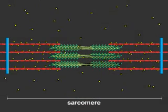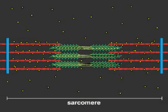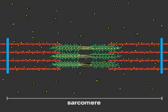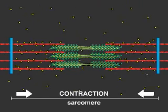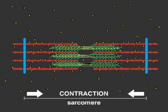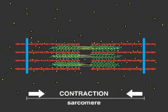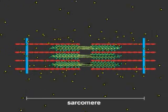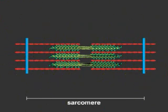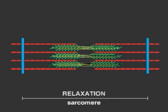Opening the myosin binding site on the actin filaments allows the myosin motors to crawl along the actin, resulting in a contraction of the muscle fiber. Calcium is then quickly returned to the sarcoplasmic reticulum by the action of a calcium pump. Without calcium, myosin releases actin, and the filaments slide back to their original positions.